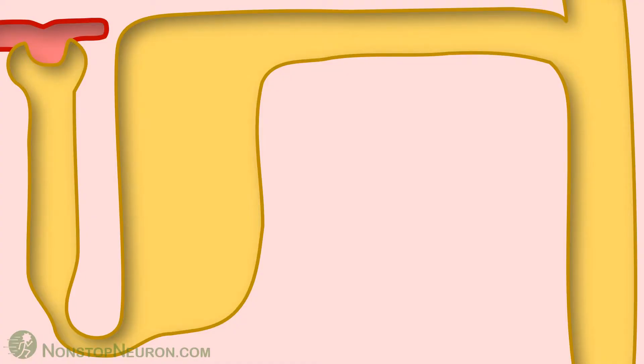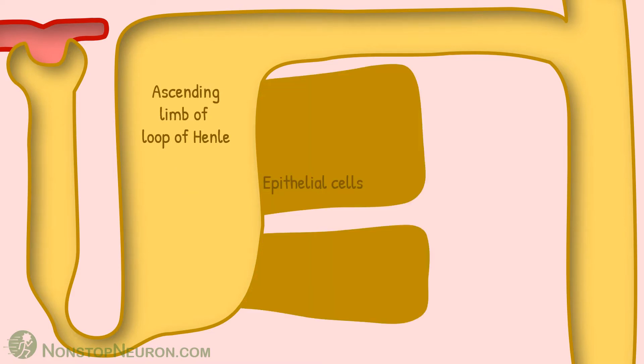First, let's see relevant physiology. This is the nephron. This is the thick ascending limb of loop of Henle. These are epithelial cells making the wall of the tubule, and this is paracellular space in between the cells.